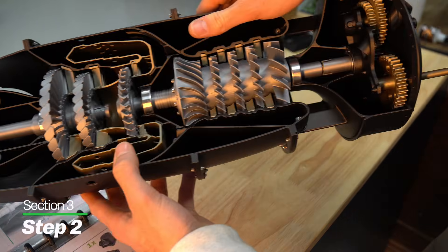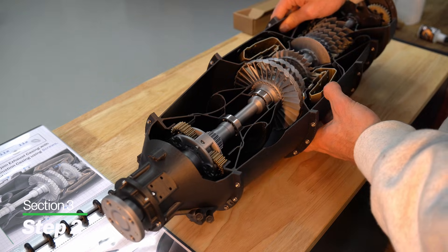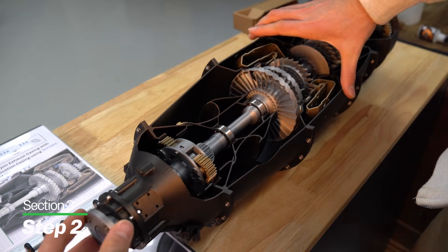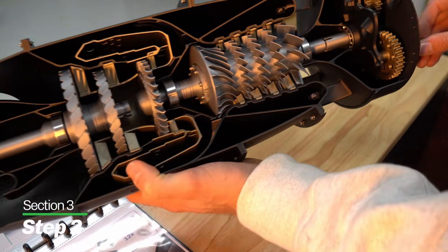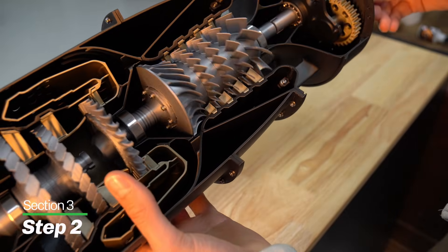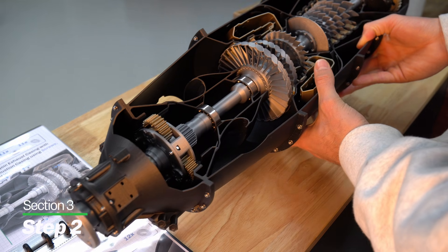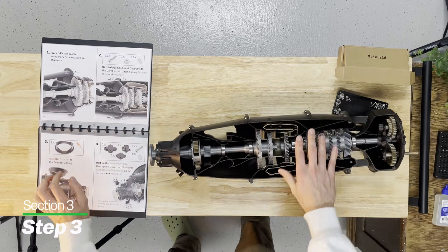Just like that, the whole main body of the engine is assembled. This is the point at which you turn everything and test everything out. Make sure everything rotates nicely. Does the spline disengage and engage again? If yes, we can move on to adding the accessories. Step number three.